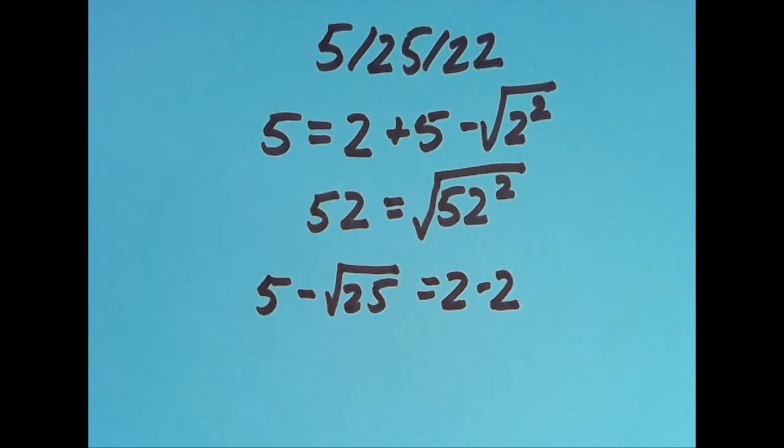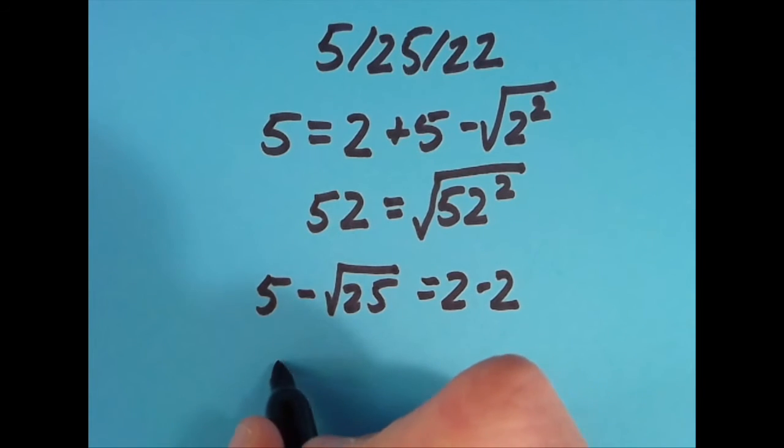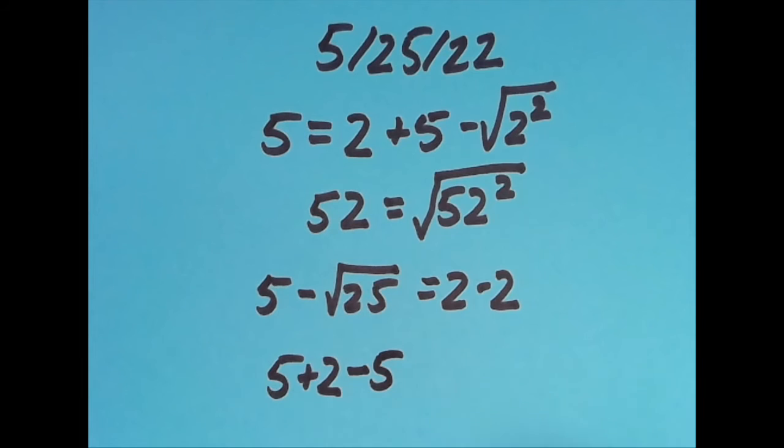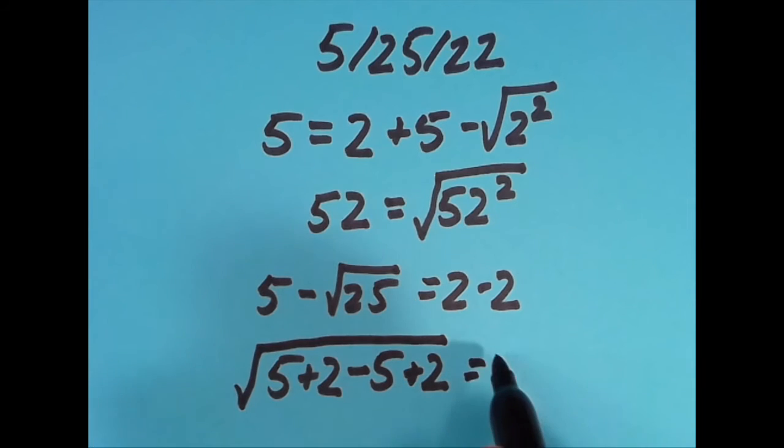And the last one I came up with was that 5 plus 2, which is 7, minus 5, which is 2, plus 2 more, which is 4, and the square root of 4 is 2.